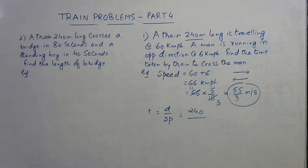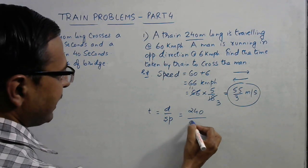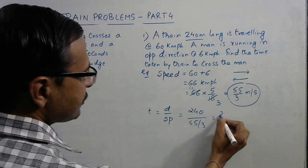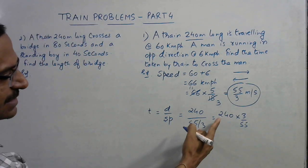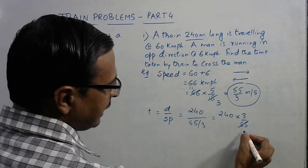So we need to divide this by 55 by 3. This will become 240 into 3 by 55. Now we can cancel this by 5, this will be 11, and this will be 48. So this is 48 into 3, 144 by 11.